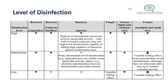High-level disinfection chemicals possess sporicidal activity — meaning killing or eradication of spores. Only with extended exposure time are high-level disinfectants capable of killing high numbers of bacterial spores in laboratory tests. High-level disinfection is used mainly for microorganisms that produce spores. Intermediate-level disinfection refers to chemicals that exhibit some sporicidal activity while others have no demonstrable sporicidal activity. Low-level disinfection has efficacy only on some microorganisms and has no sporicidal activity.